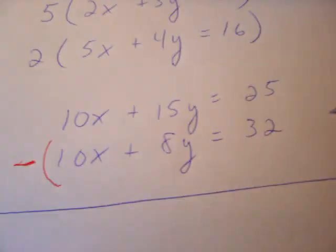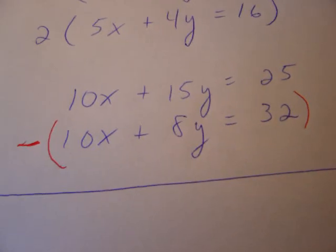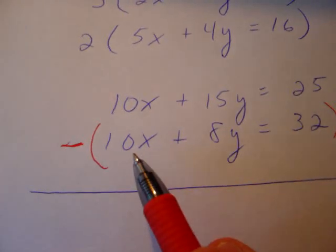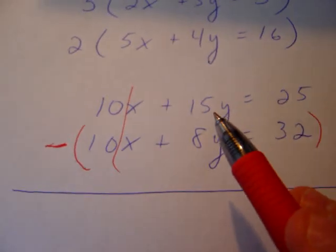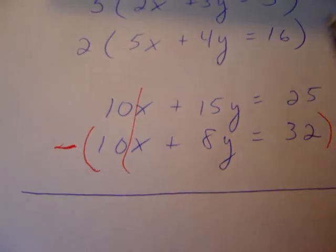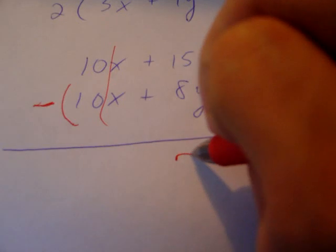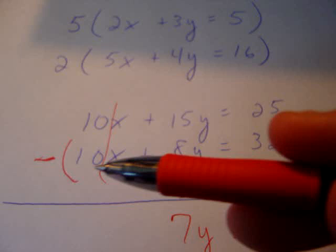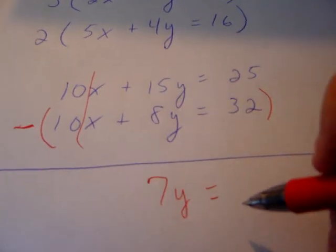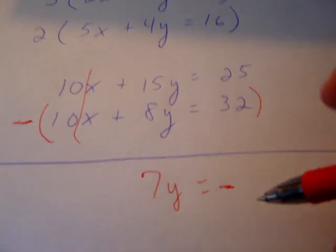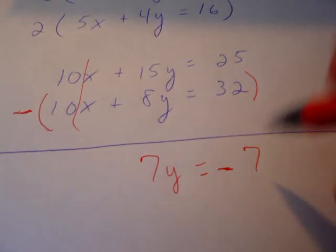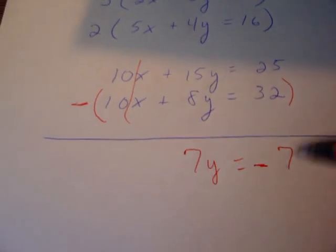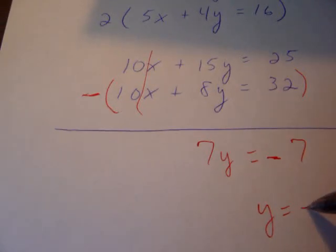And you don't subtract just the 10x. You subtract the entire problem. So here we go. 10x take away 10x, 0. That cancels. 15y take away 8y leaves us with 7y. And finally, 25 take away 32 brings us to negative 7. So now we have 7y equals negative 7. Dividing both sides by 7, you get y equals negative 1.